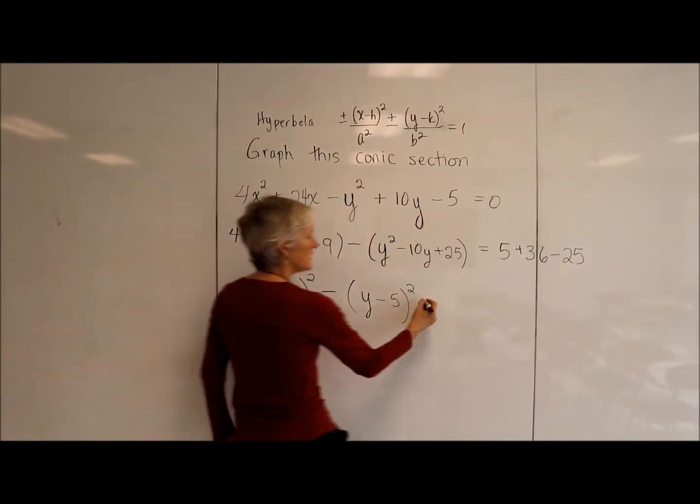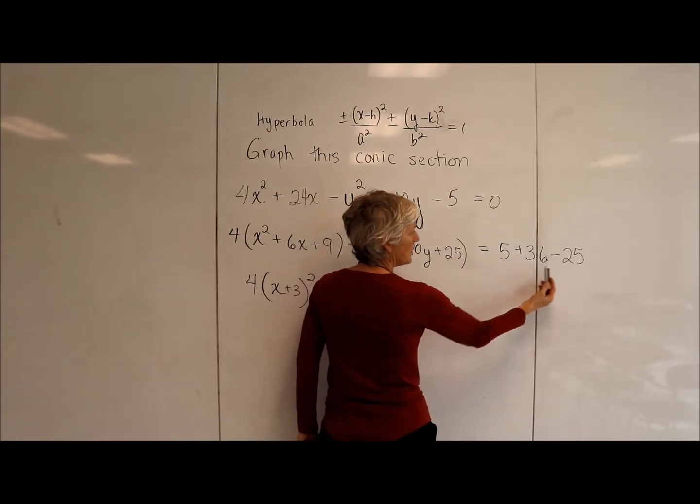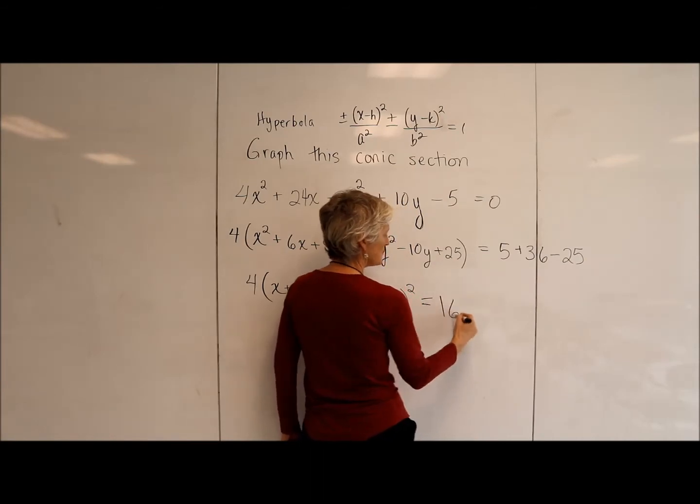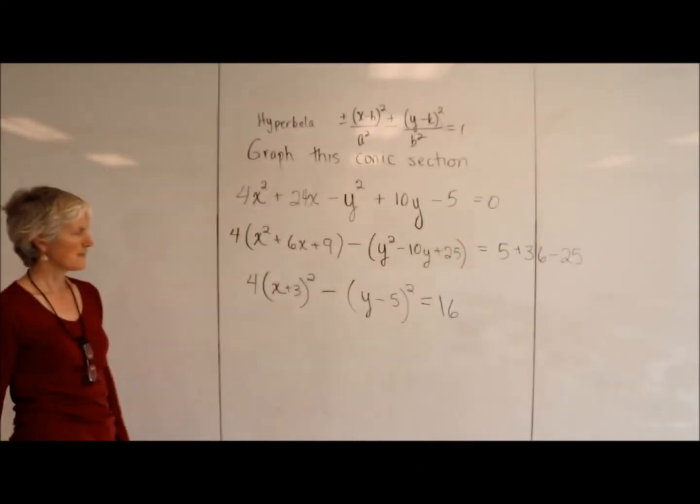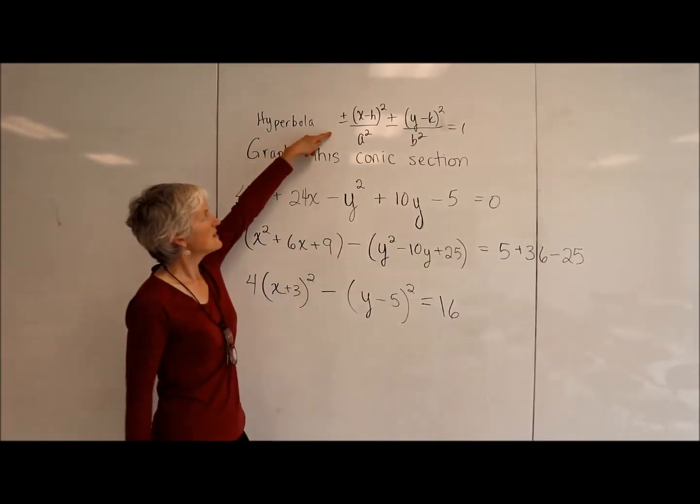And here we go. Let's see. 5 minus 25 is negative 20 plus 36. Did I do my arithmetic right? Looks good. I'm almost to this shape.